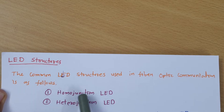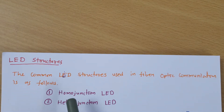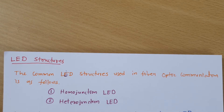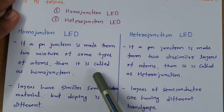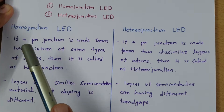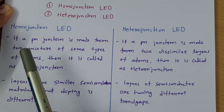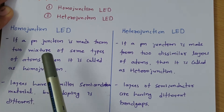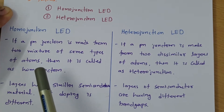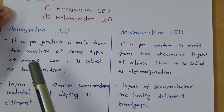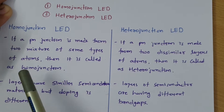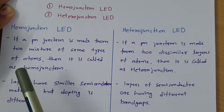When we talk about homo junction LED, what is it first of all? Homo junction LED is made up of a PN junction of two materials with the same type of atoms. Like when we use P-type material and N-type material in a PN junction, both P and N materials are made up of the same atoms.